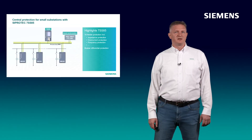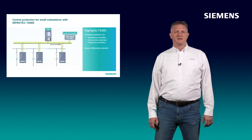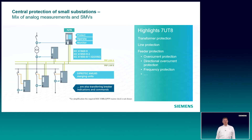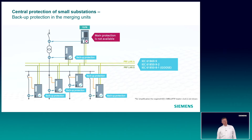Let's get into some applications. Central protection using our 7SS85 distributed busbar protection device, for example. You can protect 10 feeders with, for example, impedance, overcurrent protection, or frequency protection, and on top, the busbar differential protection. Central protection of a small substation with the 7UT87 transformer differential protection is another example, which covers transformer protection and the line protection to the in-feeding line. A mix of directly connected analog values with subscription of sampled value streams is possible. The backup protection can be realized in the merging unit directly, which further increases reliability.